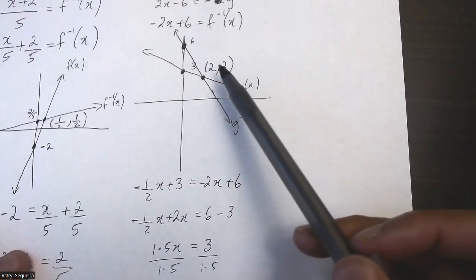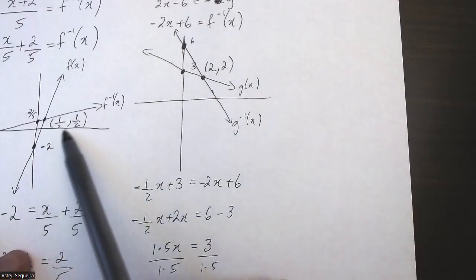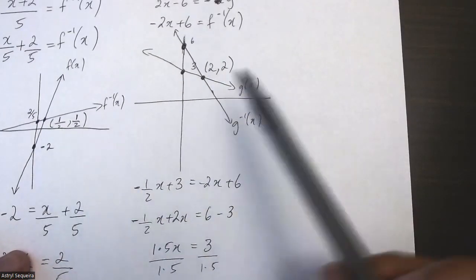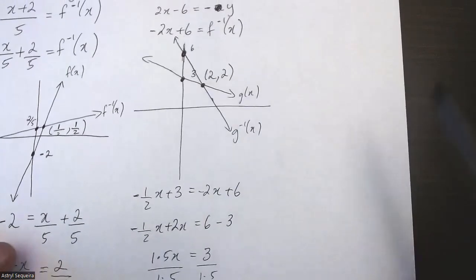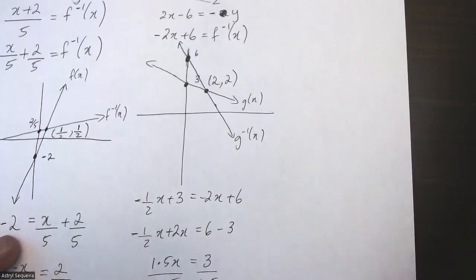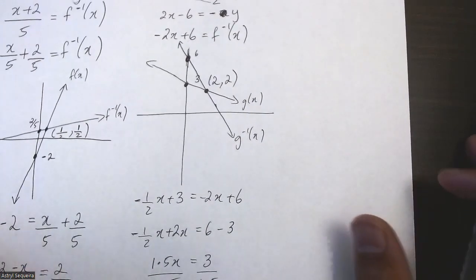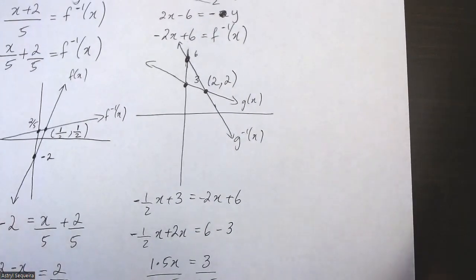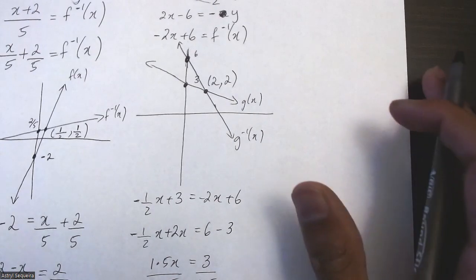It looks like the x and y values are the same in both intersection points so far. I wonder if that's actually true for all cases — let's do all the examples and see.